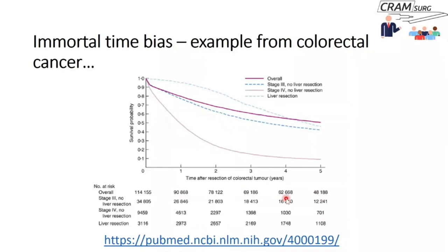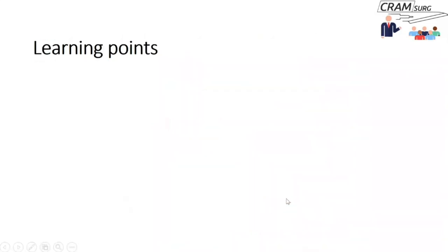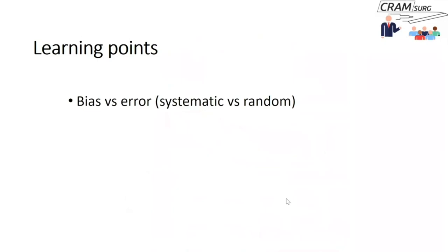There is no randomized controlled trial evidence, to my knowledge, that colorectal liver resection improves survival. The observational study data must be taken with a pinch of salt, as immortal time bias may be at play. There is a very interesting article in an epidemiology journal explaining this concept in detail, for those who want to explore further.